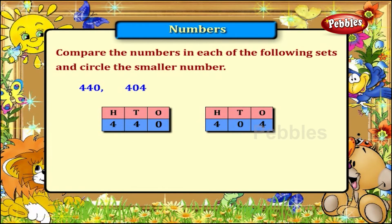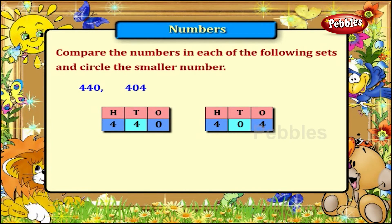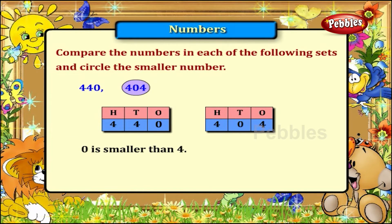The next set of numbers: 440 and 404. The numbers in the hundreds place are the same, so now compare the numbers in the tens place. 0 is smaller than 4, so 404 is smaller than 440.